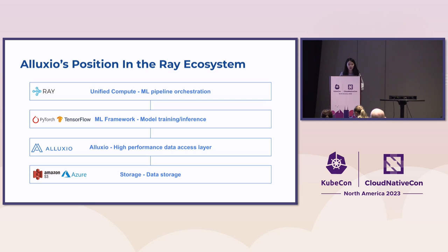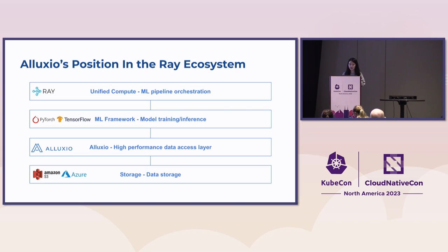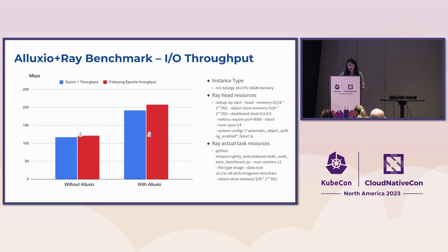That brings Alluxio into the Ray ecosystem. Alluxio sits between the model training and inference framework and the storage system, fetching data from remote storage and providing high-performance data for model training and inference. In a simple benchmark using Ray's nightly tests from their public GitHub repo, comparing Alluxio plus Ray versus Ray plus S3 direct read, Alluxio increased performance by at least one third. Note this is with same-region S3 — if your storage is further away or you have network congestion, the benefits may be even greater.